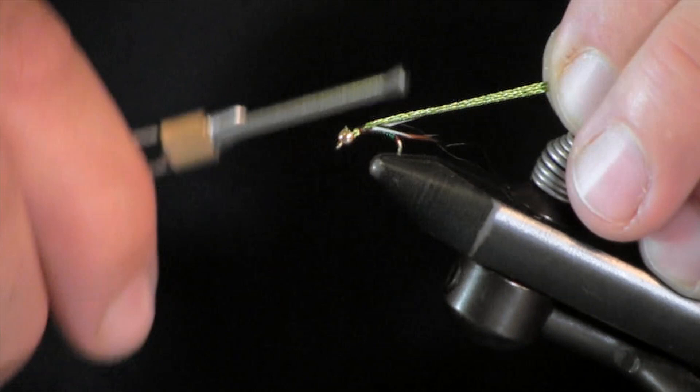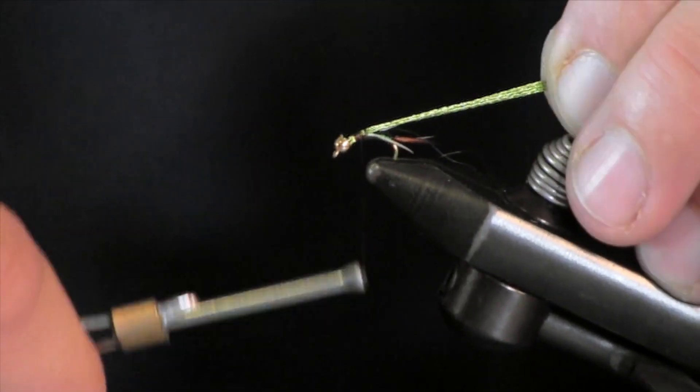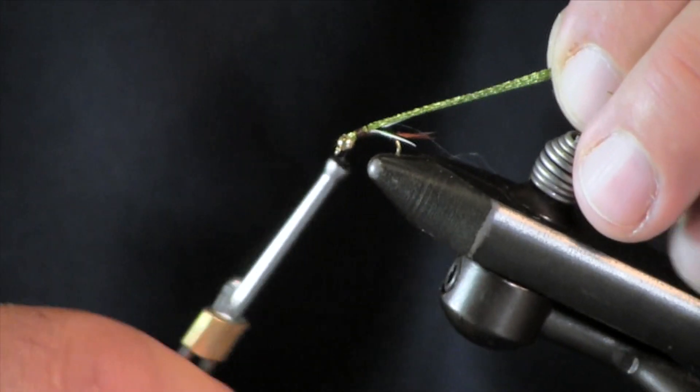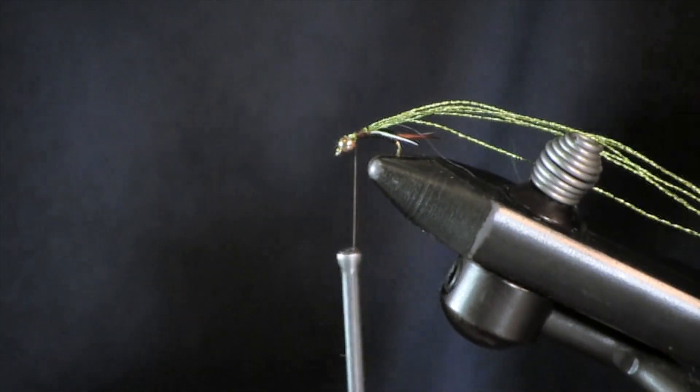Just hold this down and tie it on for the back. This is actually going to become the back and my legs on this fly.